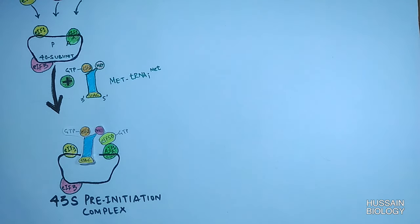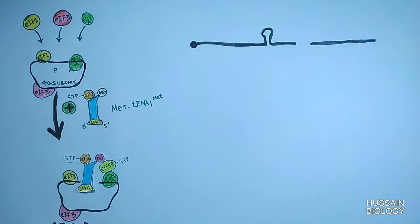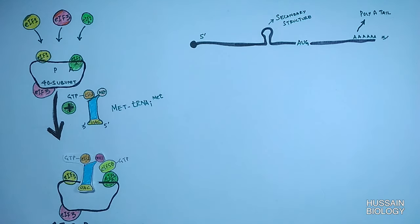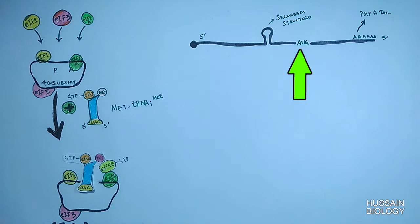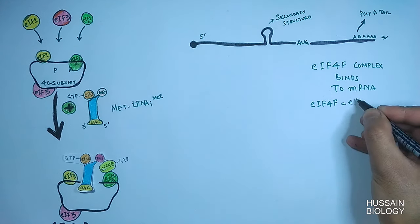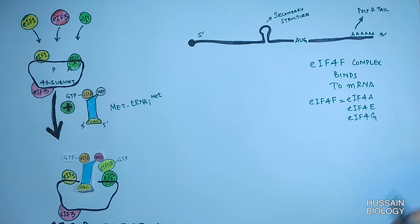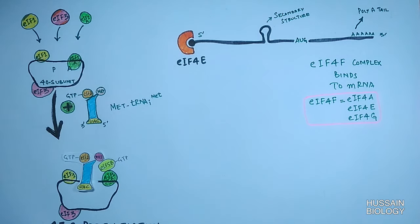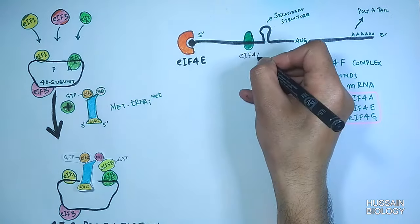The whole complex formed is termed the 43S pre-initiation complex. On the other hand, we have the mRNA molecule with a 5' end bearing the 7-methylguanosine cap and a 3' end with a poly-A tail, along with some secondary structures as shown in the diagram, and an AUG initiation codon. To this mRNA, the eIF4F complex binds; it consists of three factors: eIF4A, eIF4E, and eIF4G. eIF4E binds to the 7-methylguanosine cap at the 5' end, and eIF4A binds near the secondary structures.